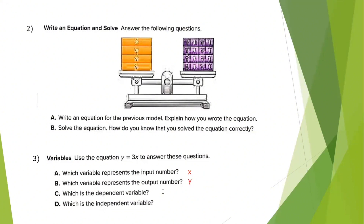Number C: Which is the dependent variable? The dependent one is y — it depends on the value of x. The independent variable is x. For example, if x equals 1, then 1 times 3 equals y, so y equals 3, which is the output and the dependent value. If x equals 3, then 3 times 3 equals 9, so y equals 9. x is always the independent variable.